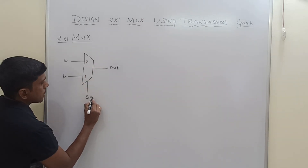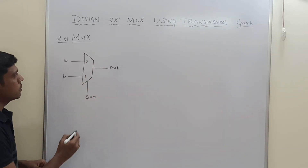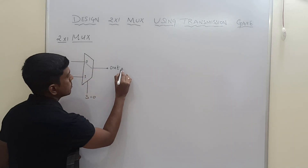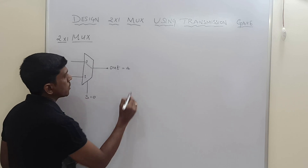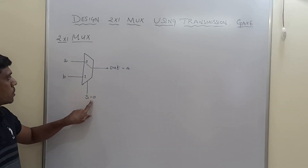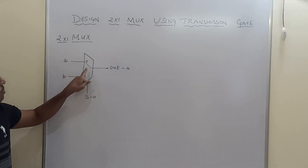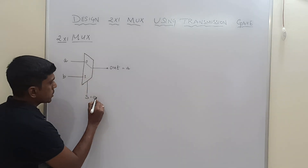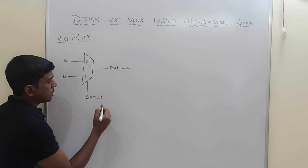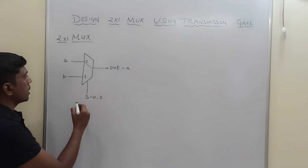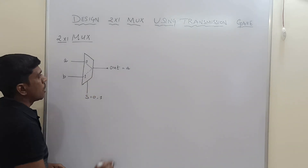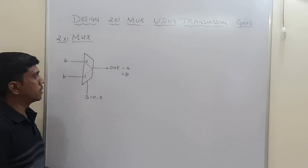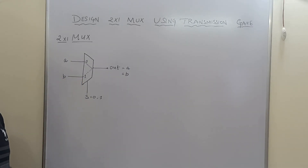When the selection line value equals 0, input A is mapped to the output — so output equals A. When the selection line value equals 1, input B is mapped to the output — so output equals B. This is the basic operation of the multiplexer.